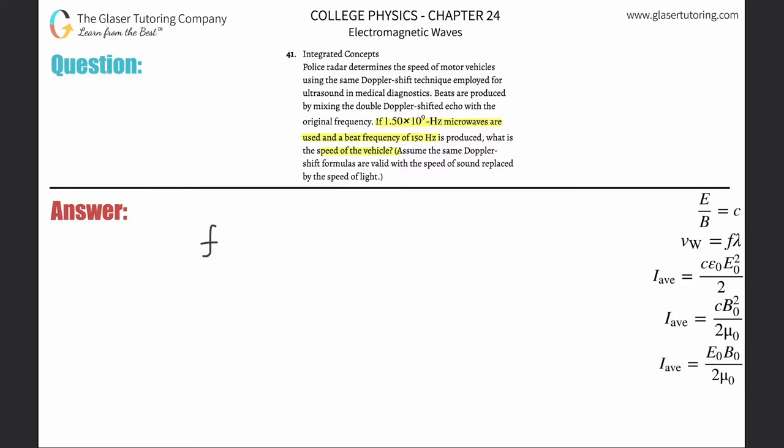We can say that this represents the frequency that the observer is experiencing, that will equal the velocity of the microwave plus the velocity of the observer of the car, divided by the velocity of the microwave, multiplied by the frequency of the microwave.